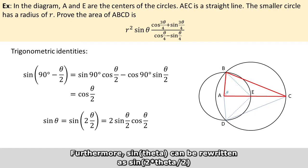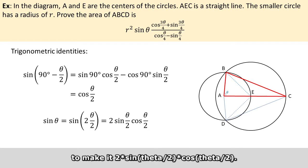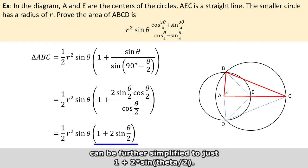The sine of (90 degrees minus theta over 2) does not look very convenient, so we apply a subtraction identity. Because sine of 90 degrees equals 1 and cosine of 90 degrees equals 0, this simplifies to cosine of (theta over 2). Furthermore, sine of theta can be rewritten as sine of 2 times (theta over 2), which enables the use of a double angle identity to make it 2 times sine of (theta over 2) times cosine of (theta over 2). Therefore, the parenthesized terms can be further simplified to just 1 plus 2 times sine of (theta over 2).